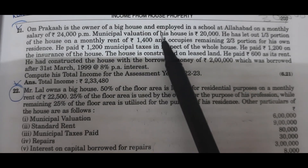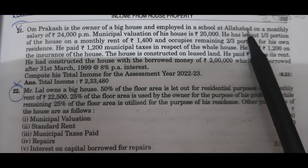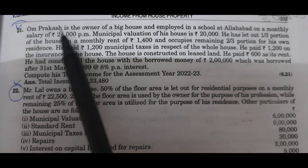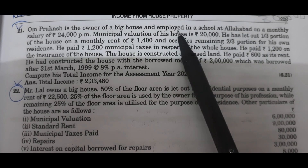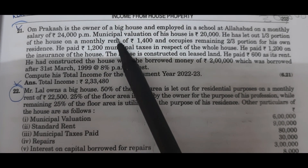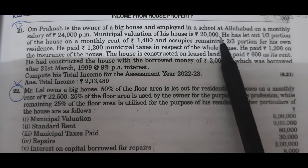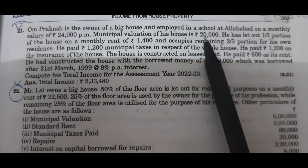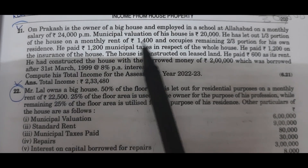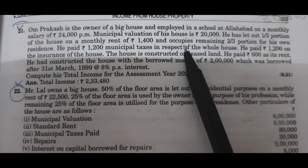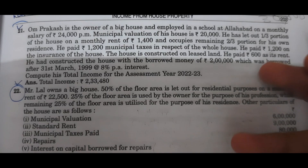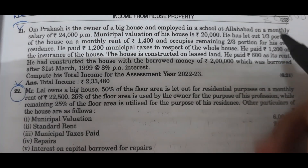Om Prakash is the owner of a big house and is employed in a school at Allahabad on a monthly salary of Rs. 24,000 per month. The municipal valuation of his house is Rs. 20,000. He has let out one-third portion of the house on a monthly rent of Rs. 1,400 and occupies the remaining two-thirds portion for his own residence.